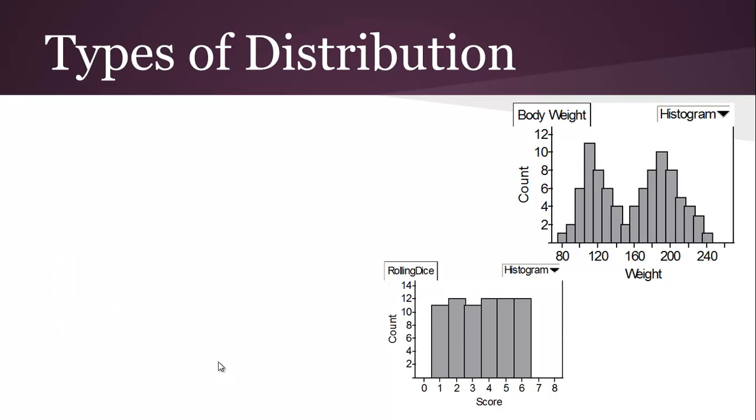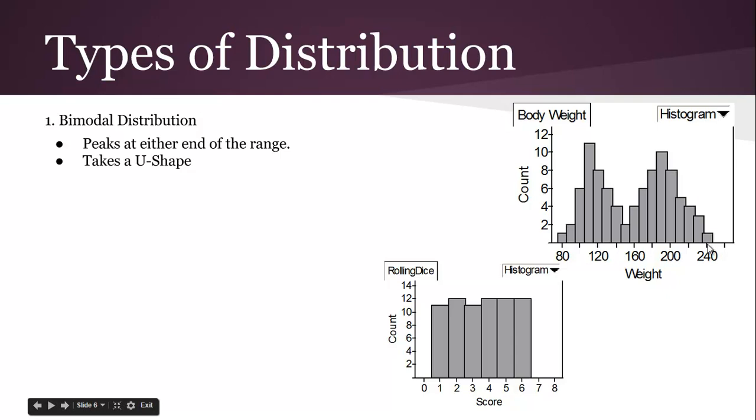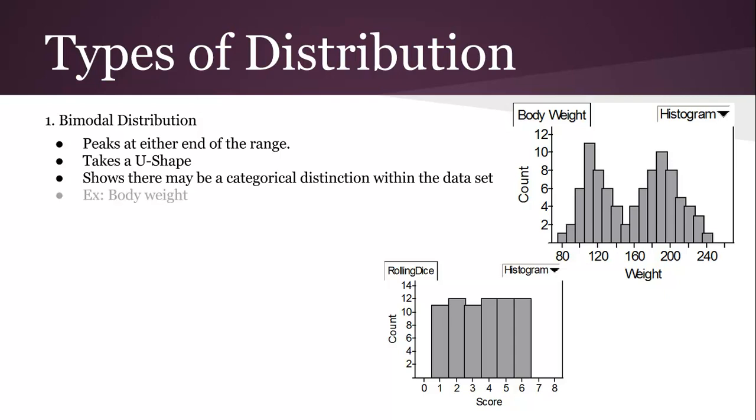A couple types of distribution that we can see from a histogram: A bimodal distribution has like 2 peaks in the data. Really, you can also call it U-shaped. It really shows that there could be different categories within the data set. So really like you can look at body weight and you've got adults versus children. So maybe if there's adults and children in this data, you can see the different types.